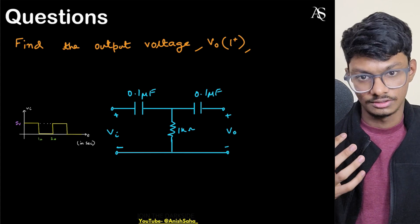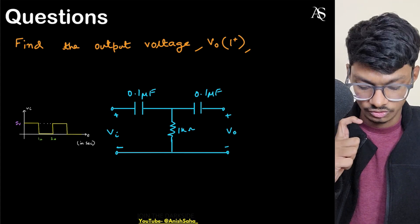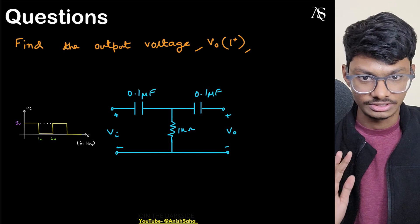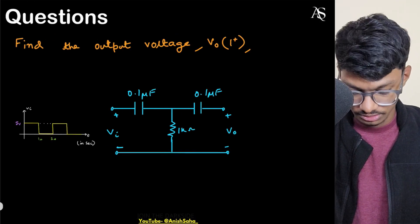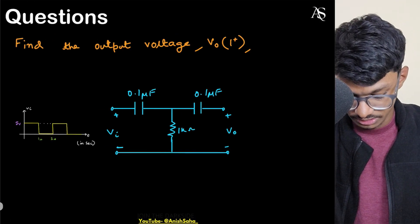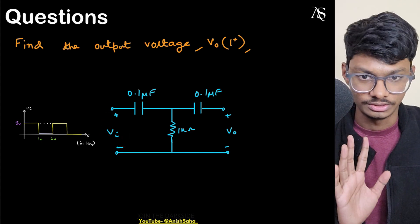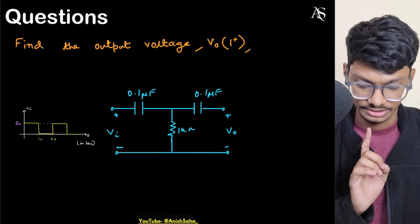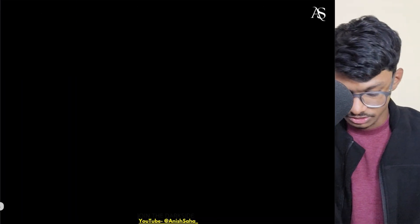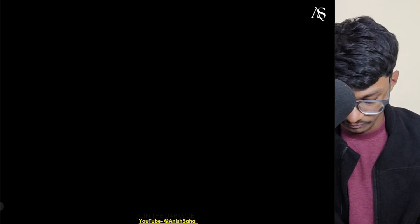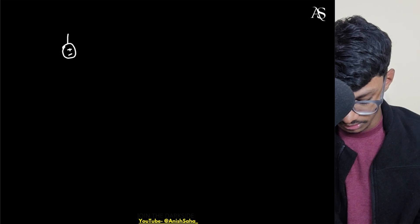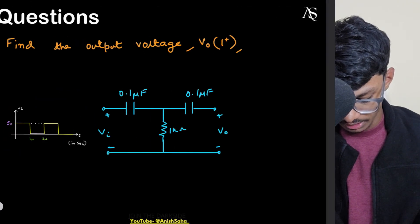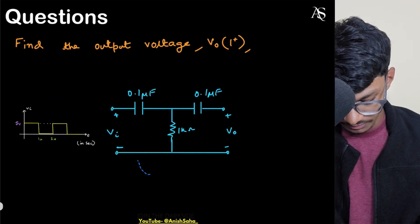Let's first solve this with the normal conventional method. What I'll do is replace the input Vi with a 5-volt voltage source up until t equals one second. So this becomes a 5-volt voltage source, and I'll copy the previous circuit.